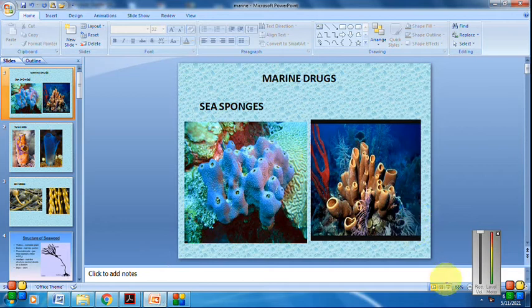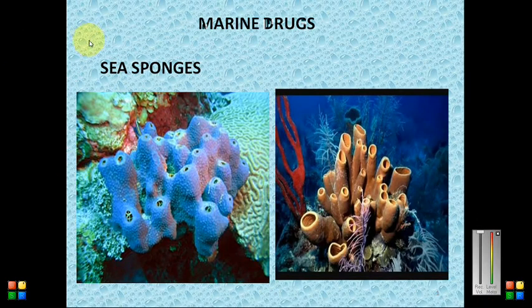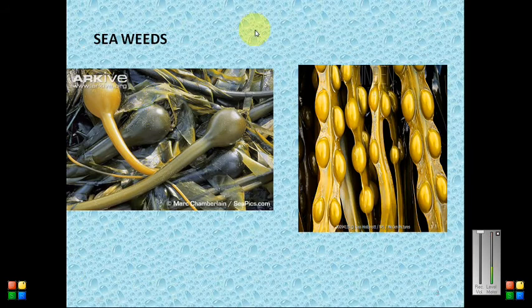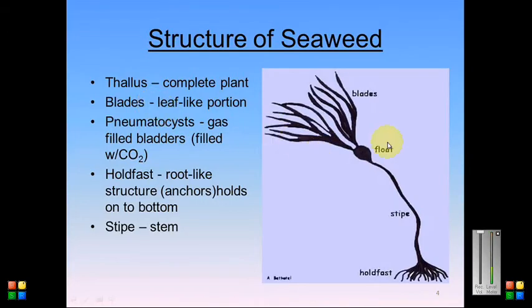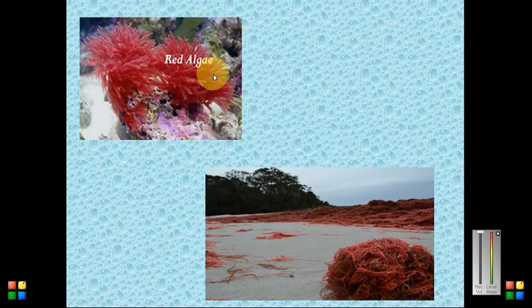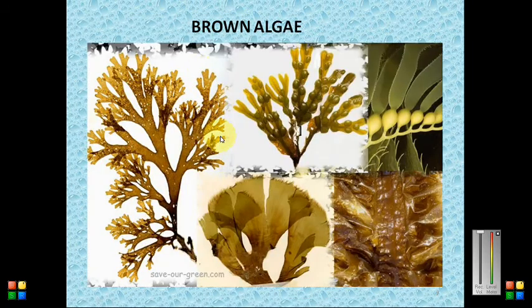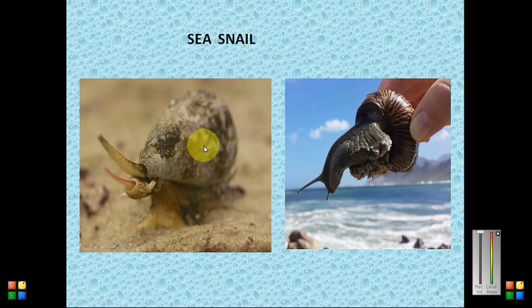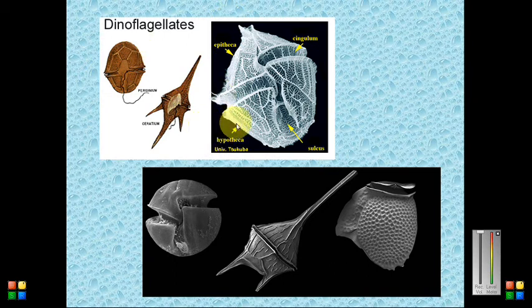Let's enjoy some beautiful photographs related to marine drugs. This is a sea sponge. Here is the tunicate — a very important marine organism and a potential source of immense marine constituents. This is a seaweed, a very important source of different compounds. We have red algae, blue-green algae, and brown algae — different kinds of algae used in marine pharmacognosy. Also shown are sea star, sea snail, and dinoflagellates, which are included under marine microorganisms.